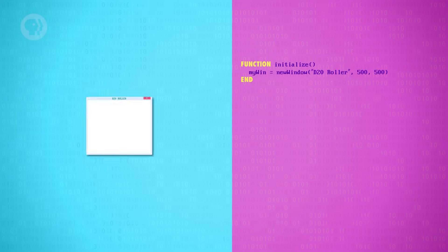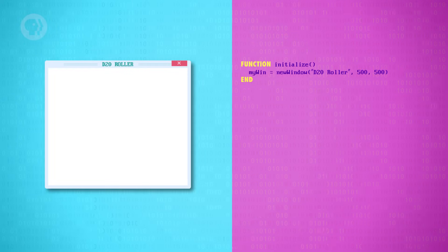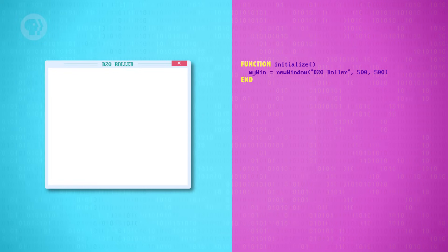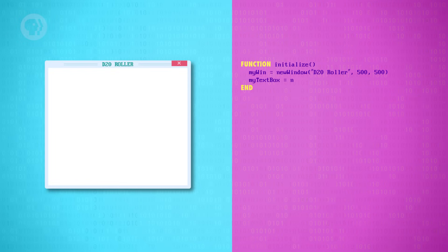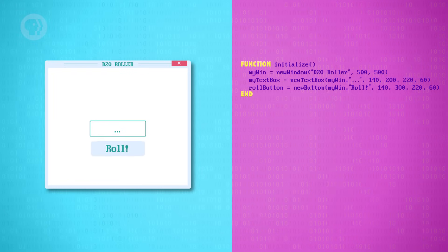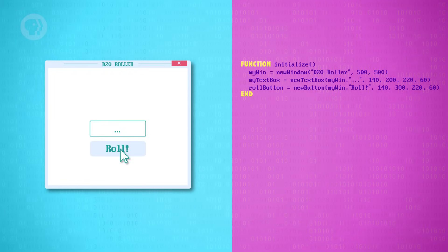Let's try coding a simple example using this new programming paradigm. First, we have to tell the operating system that we need a new window to be created for our app — we do this through a GUI API. We need to specify the name of the window and its size — let's say 500 by 500 pixels. Now let's add some widgets: a text box and a button. These require a few parameters: what window they should appear in, the default text, the X and Y location in the window, and a width and height. So now we've got something that looks like a GUI app, but has no functionality — if you click the roll button, nothing happens.